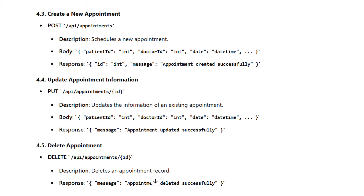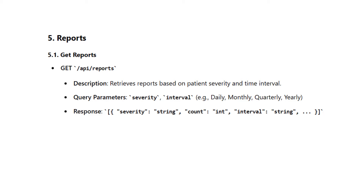Update appointment by ID uses PUT with body fields patient ID, doctor ID, and date; the response confirms the appointment was updated successfully. Delete appointment uses DELETE API/appointments/{id} and responds with an appointment deleted successfully message. The last endpoint is the report: GET API/reports retrieves reports based on patient severity and time interval using query parameters severity and interval, returning severity, count, and interval.